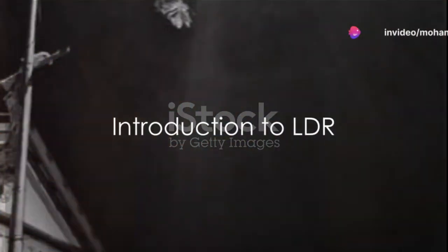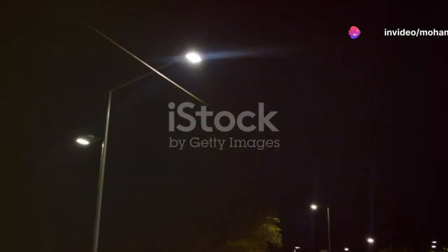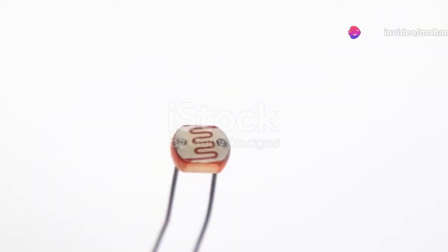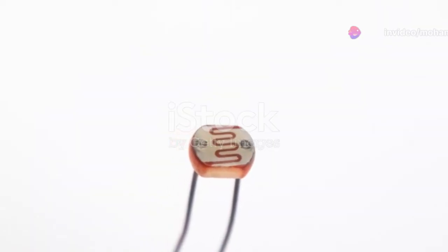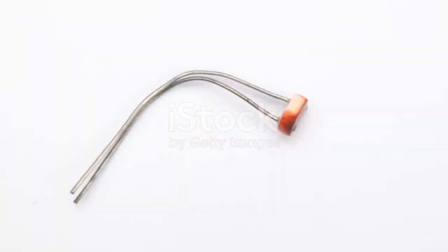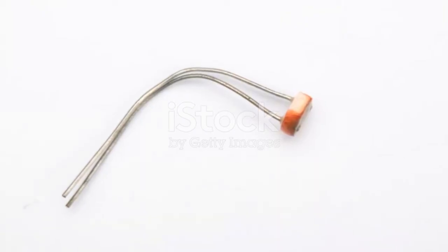Ever wondered how automatic streetlights work or how the solar light detectors function? Well, there's a little component called the light-dependent resistor, or LDR for short, that plays a crucial role.